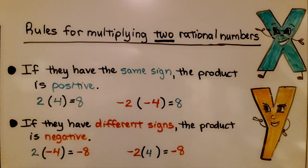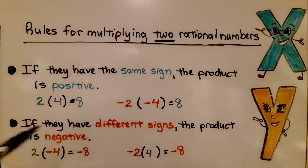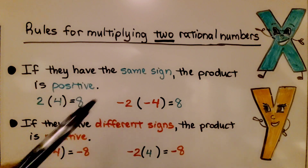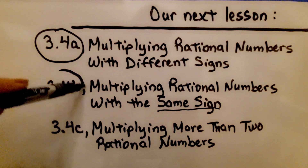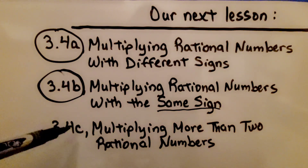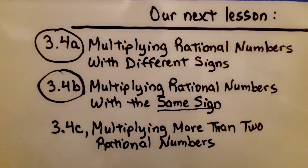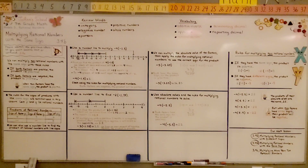So one last time — the rules for multiplying two rational numbers: if they have the same sign, the product is positive; if they have different signs, the product is negative. That's for two rational number factors. Multiplying more than two rational numbers follows the same easy rule: same sign gives a positive product, different signs give a negative product.